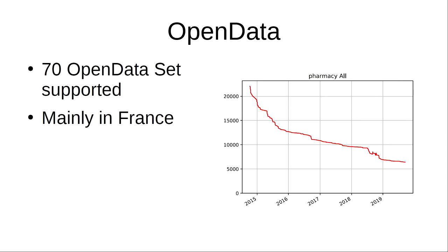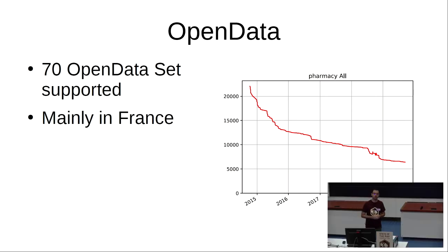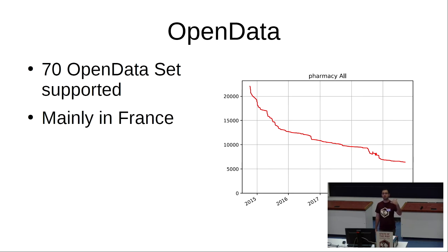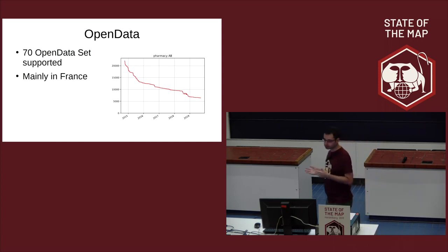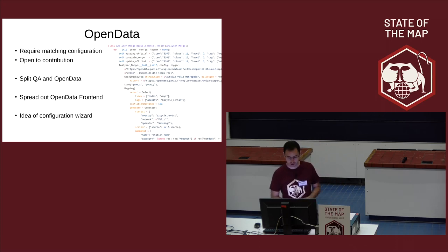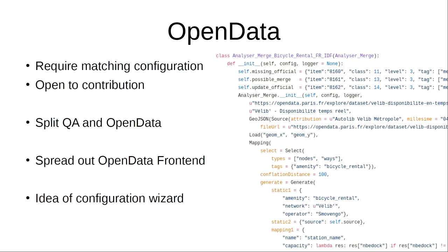We have mainly in France a lot of open data configured in Osmose. There is an example of the graph of pharmacies in France. Using a map to display missing pharmacies helps contributors integrate them. But even if contributors are not using Osmose to add pharmacies, we monitor analysis after analysis the number of missing pharmacies — so we can produce a graph over time of the remaining pharmacies to map.